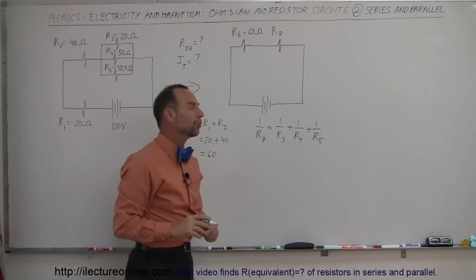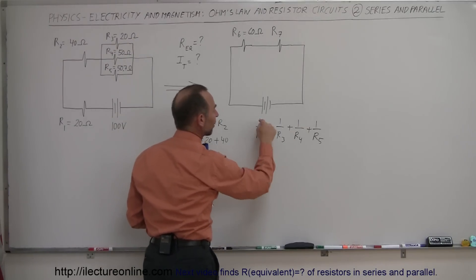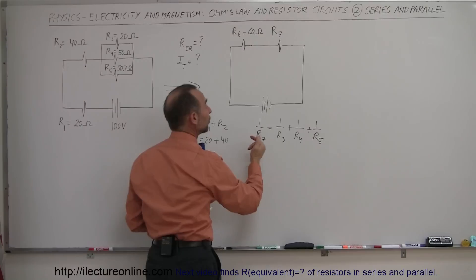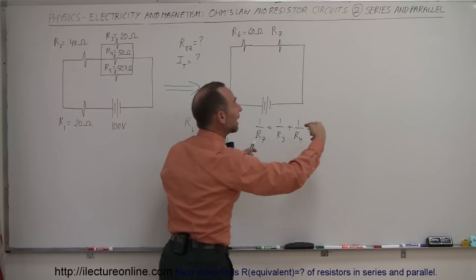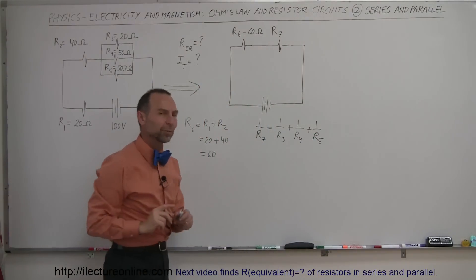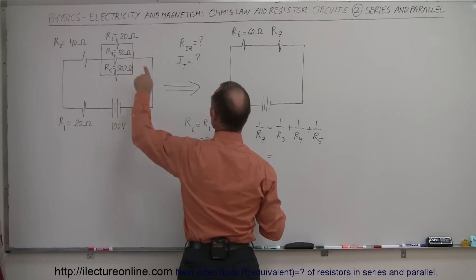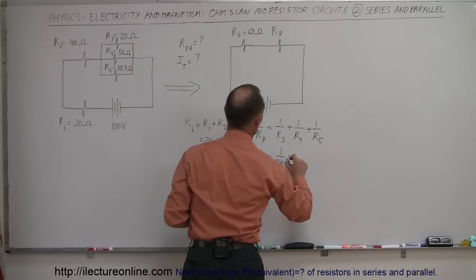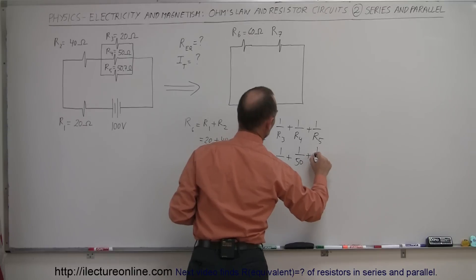Now, quite often students will make a mistake here. They'll write R7 is equal to this. So instead of writing 1 over R7, they write R7. No, it's 1 over R7. And when you get the result of this, then you have to take the inverse to get R7. We'll see in just a moment what we mean with that.